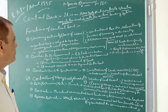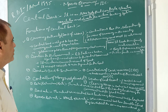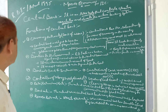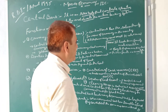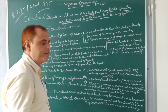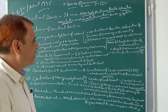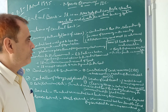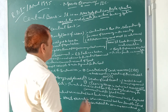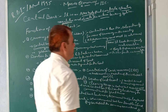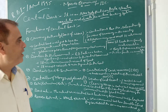The first important function of the central bank is currency authority — that means the bank issues notes. The central bank has the sole authority for the issue of currency in the country. So all the paper notes are issued by the RBI in India, except one-rupee notes and coins.